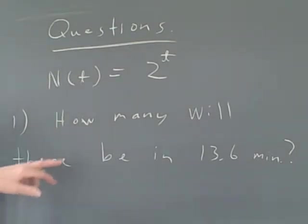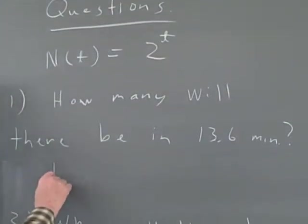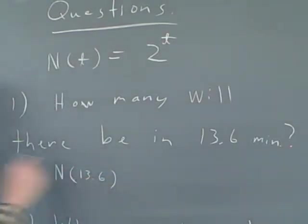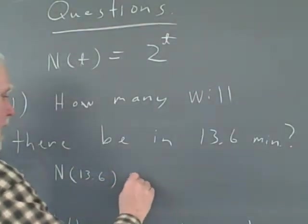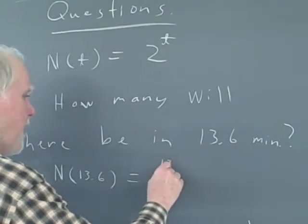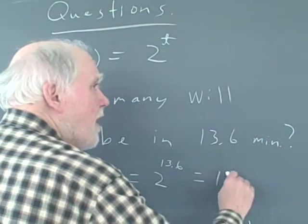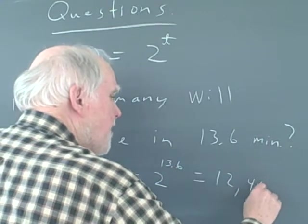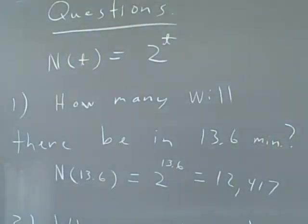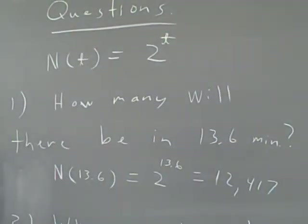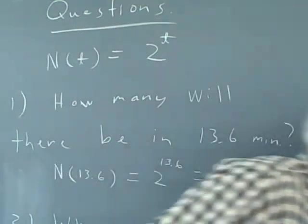Here's our equation of growth for the little bacteria in the petri dish, growing away without any enemies. We want to know how many will there be in 13.6 minutes. Well, that's the number. We use functional notation here, N(13.6), which is 2 to the 13.6 power. And if you put that in your calculator, you will get 12,417, approximately that number of bacteria in 13.6 minutes.